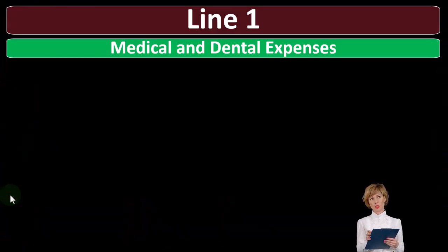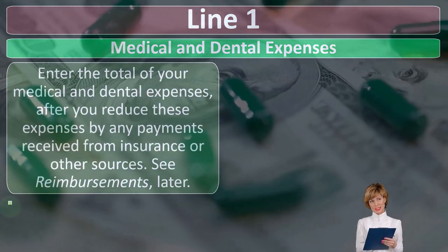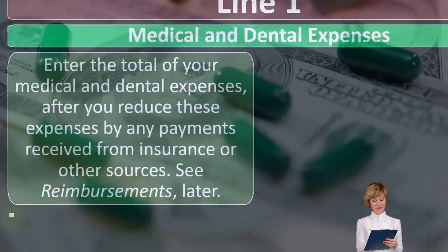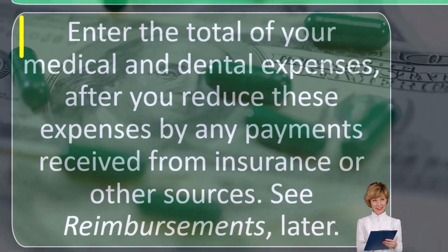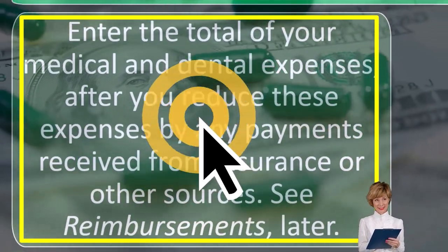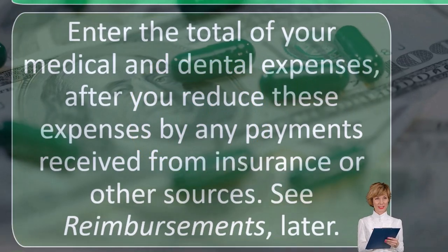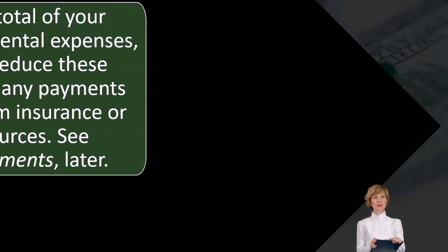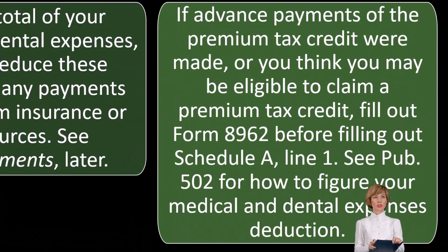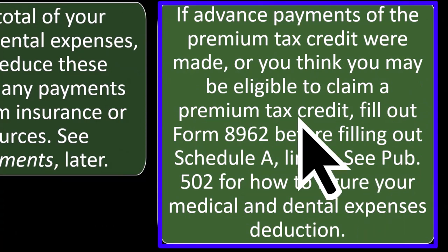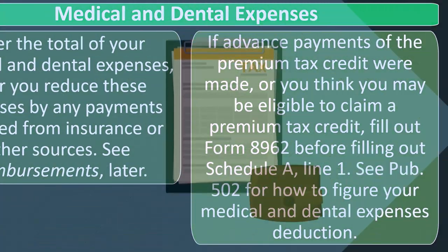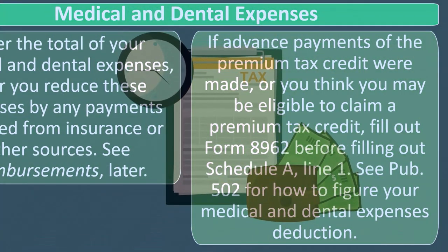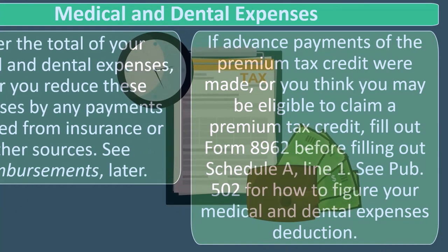For Schedule A Line 1, enter the total of your medical and dental expenses after you reduce these expenses by any payments received from insurance or other sources. If you got repaid by insurance, you didn't really pay the expense. If advanced payments of the premium tax credit were made, or you think you may be eligible to claim the premium tax credit, fill out Form 8962 before filling out Schedule A Line 1. See Publication 502 for how to figure your medical and dental expenses deduction.